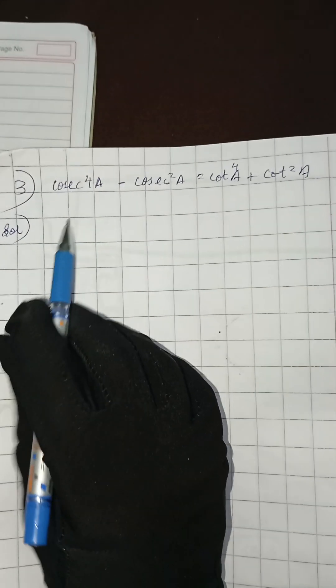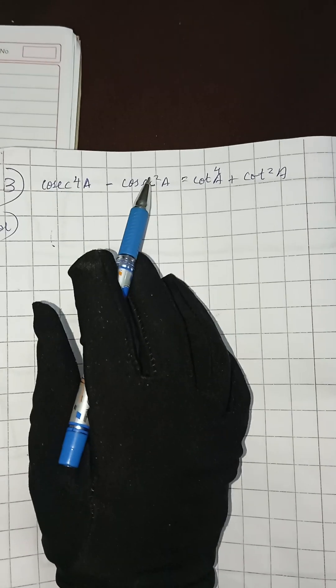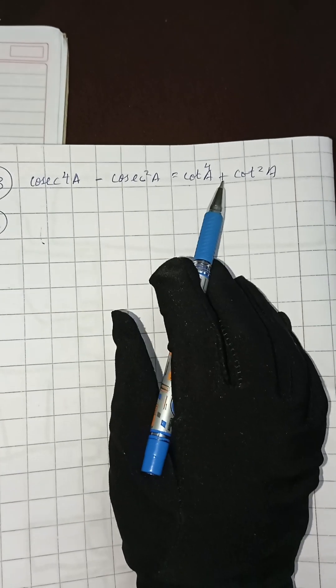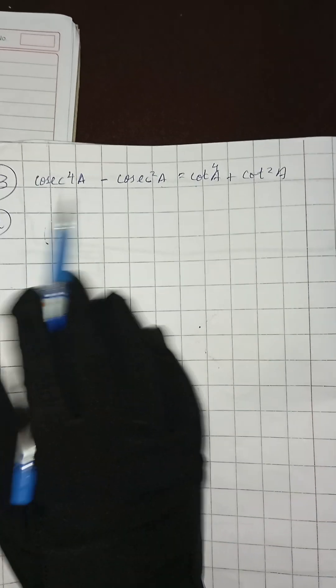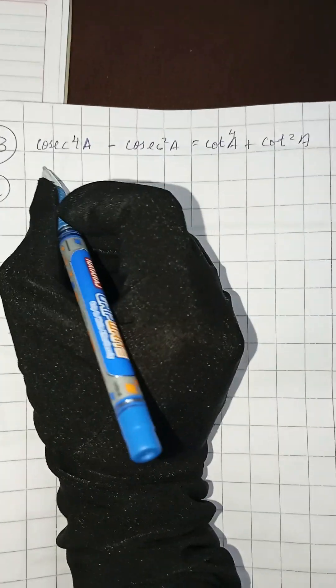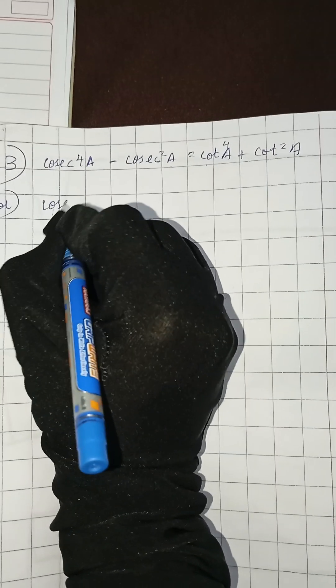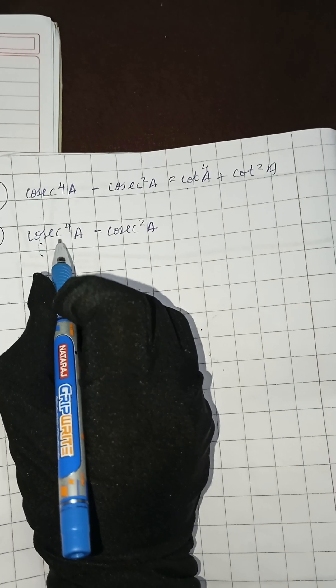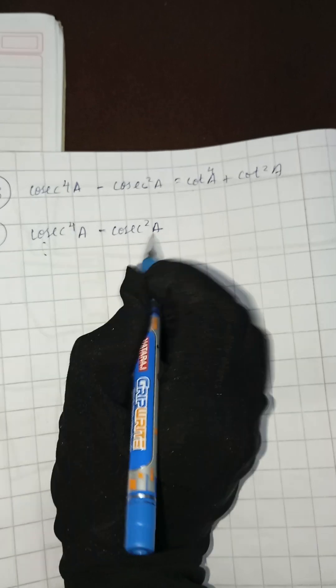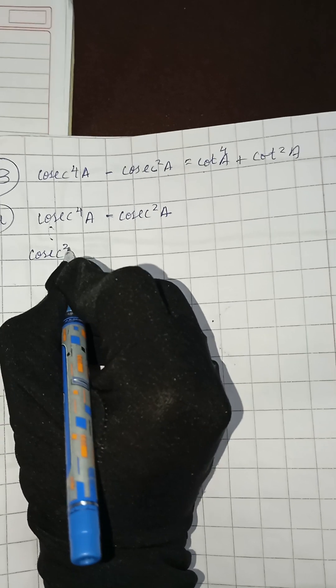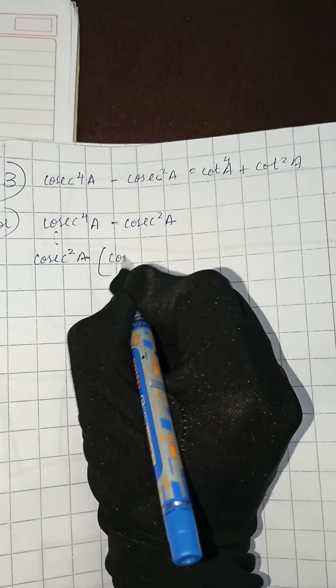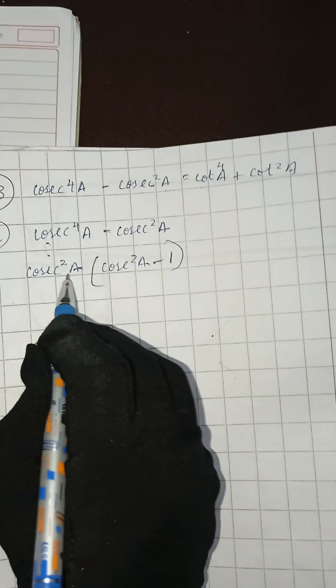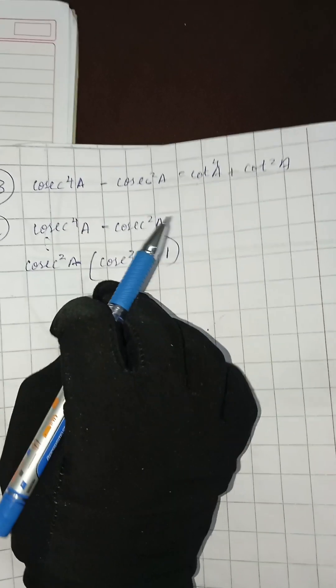The third question is: cosec to the power 4A minus cosec to the power 2A equals cot to the power 4A plus cot to the power 2A. We have to prove LHS equals RHS. Taking the LHS, we take cosec squared A as the common factor: cosec squared A times (cosec squared A minus 1).